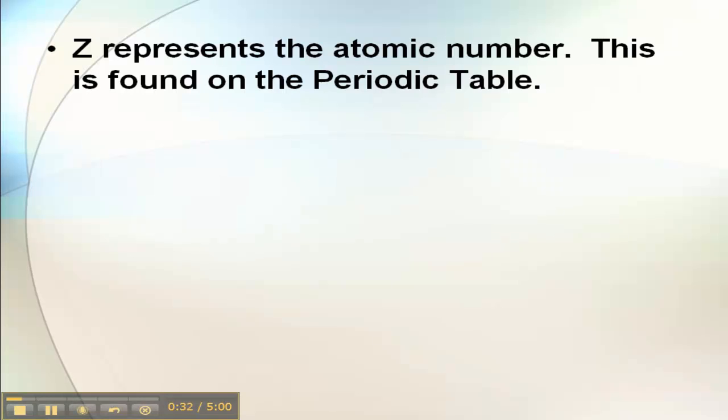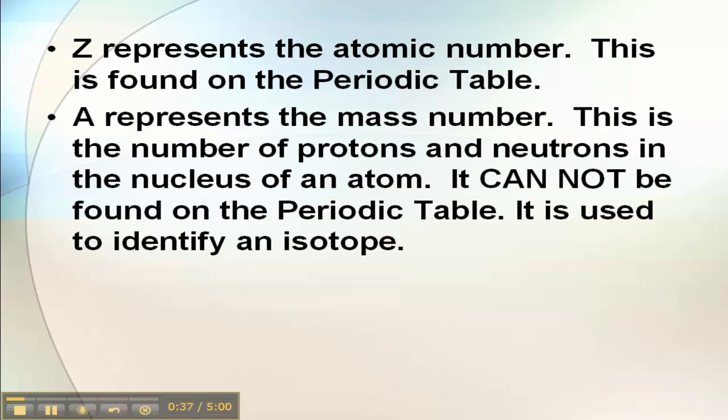All right, so Z is going to represent the atomic number. We do find that on the periodic table. You'll see it for every element.